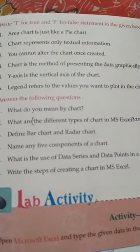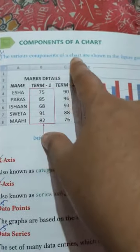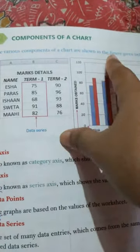Name any five components of the chart. Here is page number 27, components of a chart. The various components of a chart are shown in the figure given below.